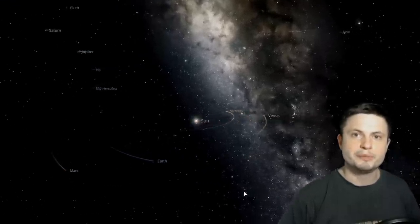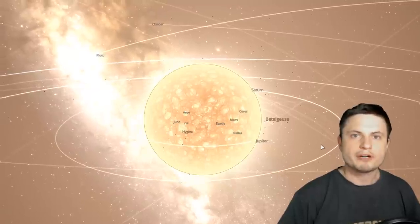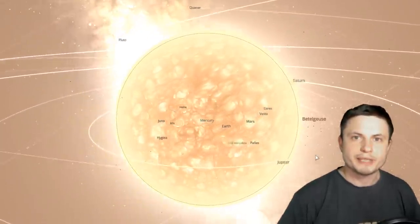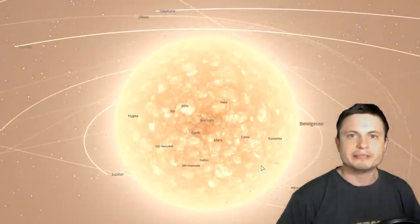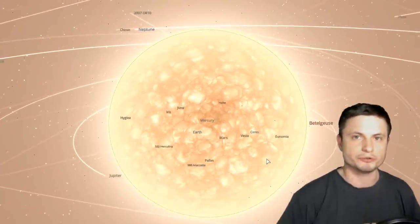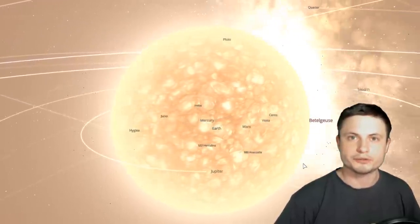As mentioned in some of the previous videos, if you were to place this star in the middle of our own solar system it would sort of look something like this, covering pretty much most of the terrestrial planets and reaching almost all the way to the orbit of Jupiter with a radius that's about 900 times the radius of our own sun. So this is a tremendously large, very bright and very powerful star.